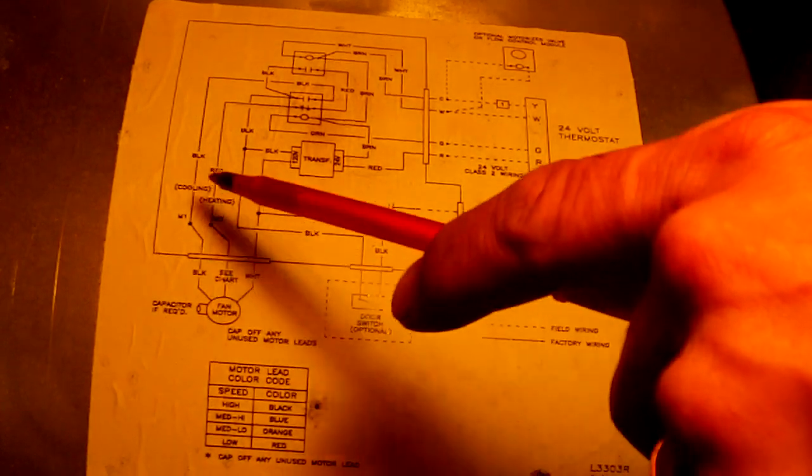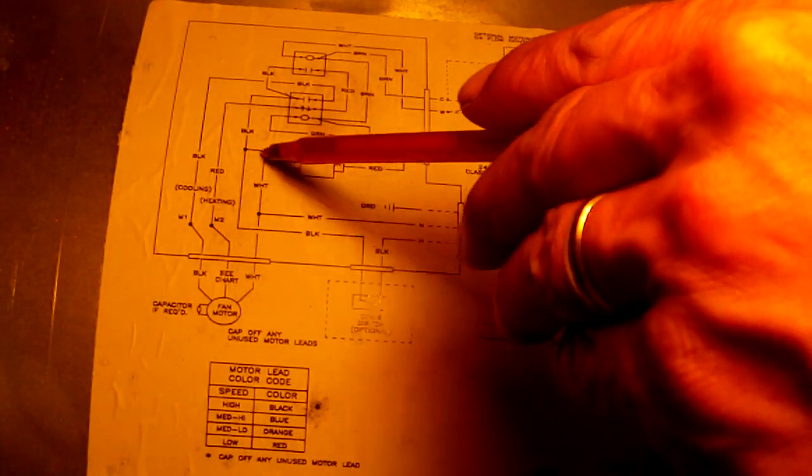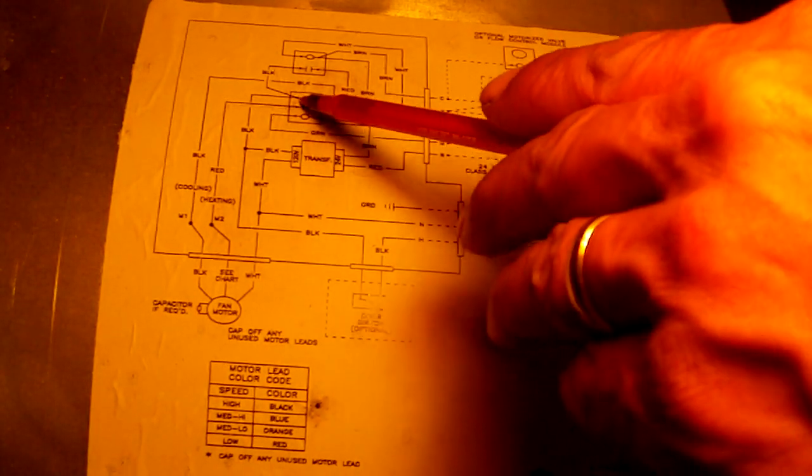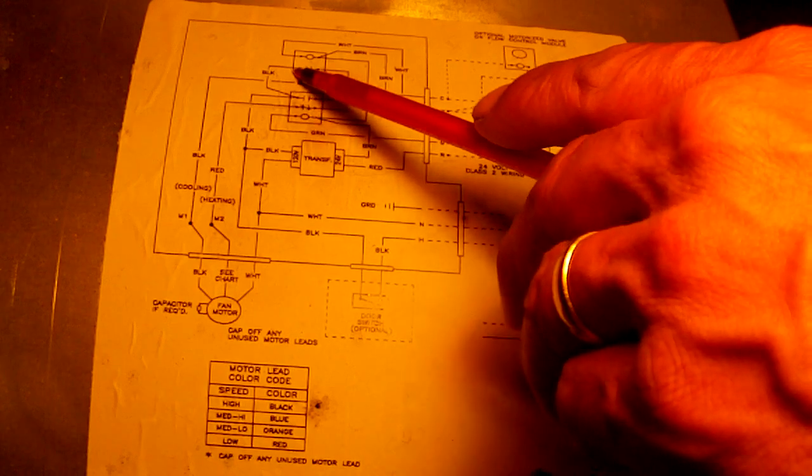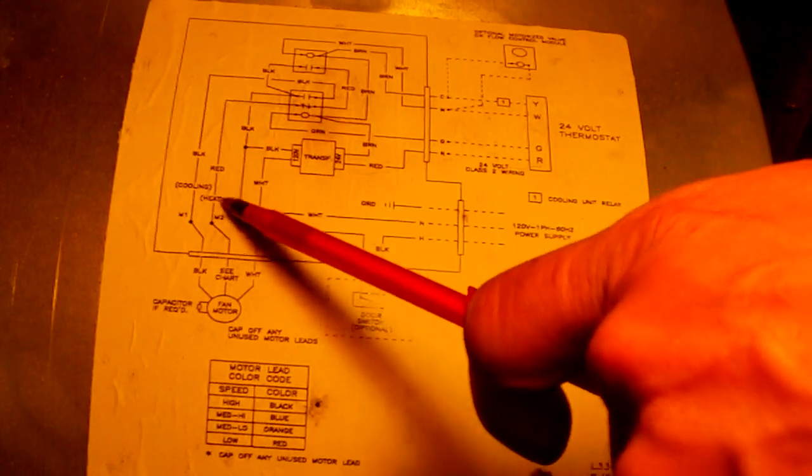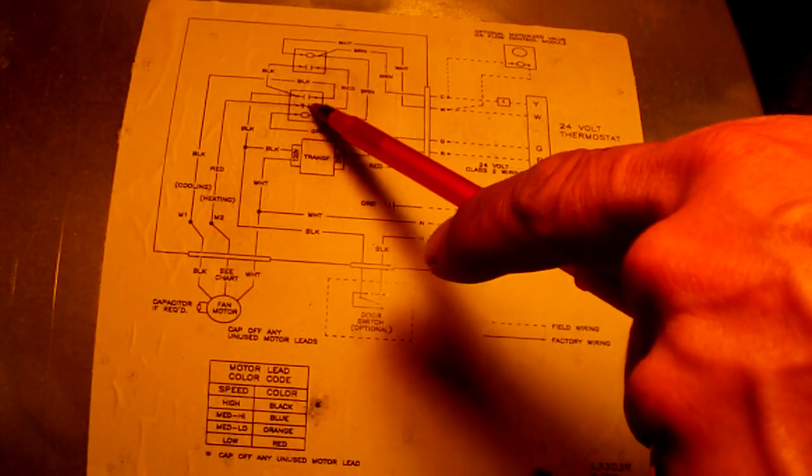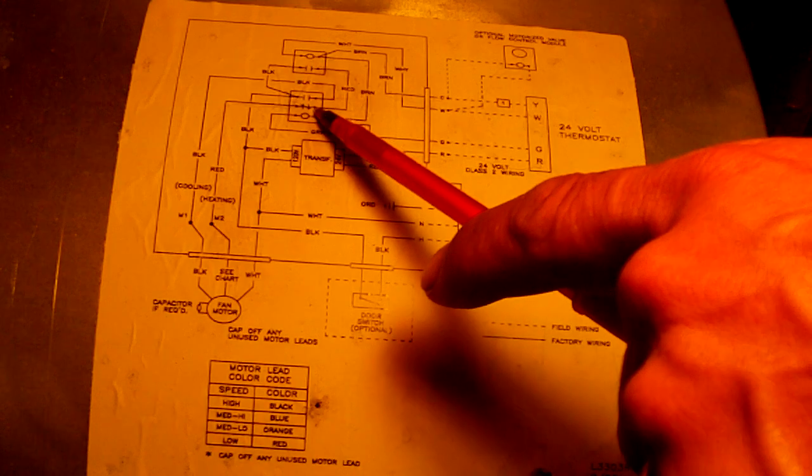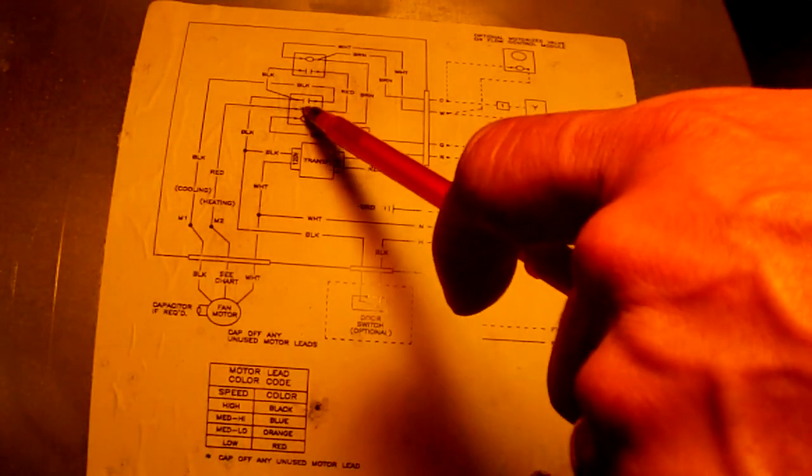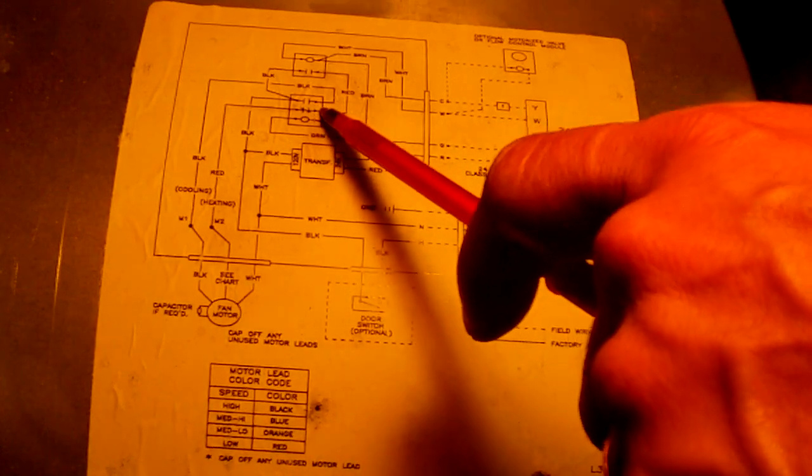That's the circuit right there. L1 goes around, powers the transformer, powers the relay, powers the heat sequencer, goes around through here. This is a relay with normally open and normally closed contacts. It's like a two-speed - they use this type for two-speed.